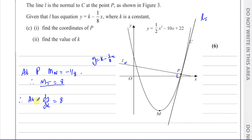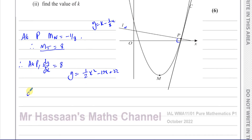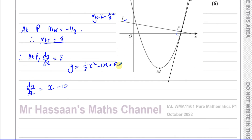At P, dy/dx equals eight. We know that y equals one-half x squared minus 10x plus 22, so we differentiate: dy/dx equals two times one-half, which is one, giving x minus 10. Setting x minus 10 equal to eight gives x equals eighteen.